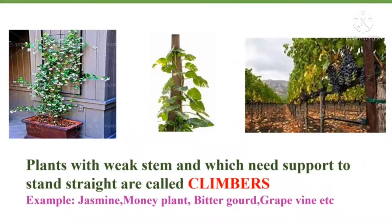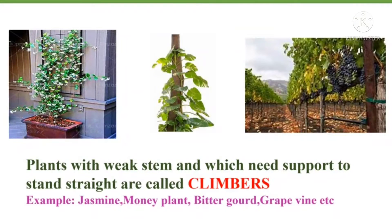Let's start with climbers. Plants with weak stems which need support to stand straight are called climbers. Dear children, climbers are plants with weak stems. They cannot hold their fruit or leaves until they get some support. Some examples are jasmine, money plant, bitter gourd, grapevine, etc.